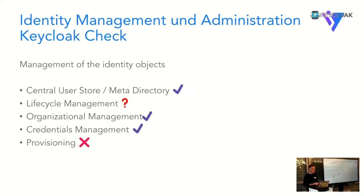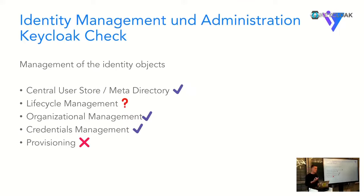For lifecycle management I put a question mark. When users register but don't finish email validation, you end up with an entry in your database. This is where the lifecycle thing begins - you want to be GDPR compliant and need something to remove this. These are things you can take care of via a cron job through the API, extensions, or whatever you like. For organizational management I put a check box because we have groups and hierarchy in groups, although for really efficient organizational management some things could be improved.